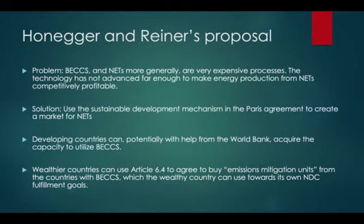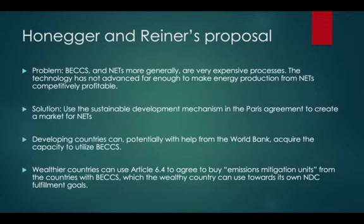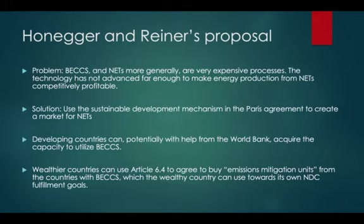The solution proposed by Honegger and Reiner is to use the Sustainable Development Mechanism in the Paris Agreement — Article 6.4 — to create an international market for NETs. The idea is that less wealthy states that are still moderate to high emitters, potentially with the help of investment from the World Bank, can acquire the capacity to utilize BECCS. Then, wealthier countries can set up agreements under the sustainable development mechanism to buy what the authors call emissions mitigation units from countries with BECCS. Effectively, the rich country pays the poorer country to offset the poorer country's carbon emissions through BECCS, and then the rich country gets to count that offset unit towards its own NDC fulfillment goals.